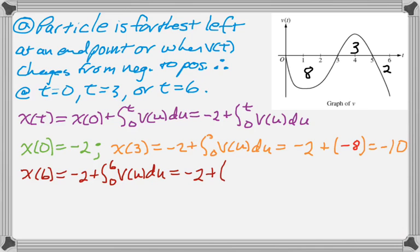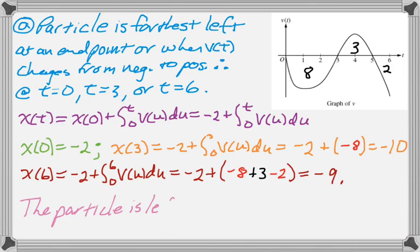plus we're going to get a -8, a positive 3, and a -2. Add all those up, we get -9. So the particle is farthest to the left at t = 3 with position -10. That's what we were asked to do.